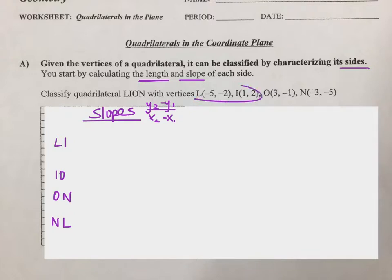So for LI I need to find the slope here. You can set up y2 minus y1, I'll do that for this first one. That's going to be 2 minus negative 2 over x2 minus x1, 1 minus negative 5. That's going to give me 4 over 6. We always want to simplify, so in this case two-thirds.